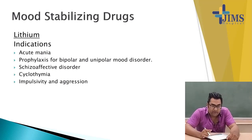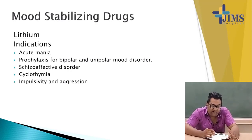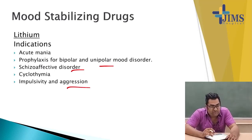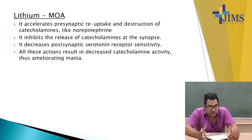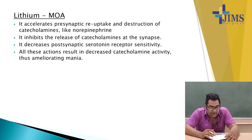Mood stabilizers are used to treat bipolar mood disorders like mania or bipolar depression. The most commonly used drug is lithium. Lithium is used in acute mania or as prophylaxis for bipolar and unipolar mood disorder, schizoaffective disorder, cyclothymia, impulsivity and aggression, and also to reduce suicidal tendency in schizophrenia and depression. It works by accelerating presynaptic reuptake and destruction of catecholamines like norepinephrine, inhibiting release of catecholamines at the synapse, and decreasing postsynaptic receptor sensitivity, thus ameliorating mania.